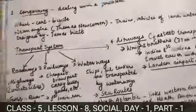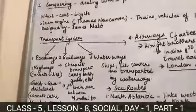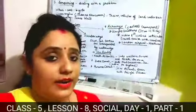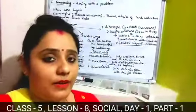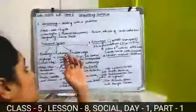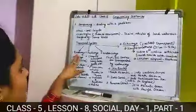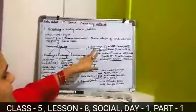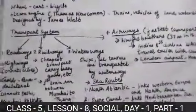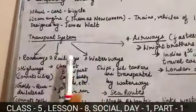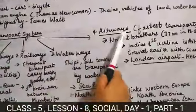Now students, how many types is the transport system divided into? The transport system is divided into four main parts: roadways, railways, waterways, and airways.